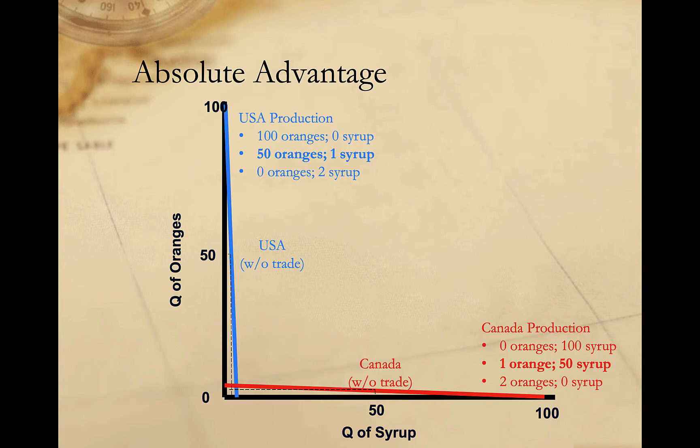When we graph this, we see the same thing. If we assume that both countries want oranges and syrups equally, without trade each is forced to divide their production and produce some of each good. If the United States divides its production evenly, it produces 50 oranges and one syrup, and consumes at this point on the production possibility frontier. Similarly, if Canada divides its production evenly, it produces 50 syrups and one orange, and consumes at this point on its production possibility frontier.